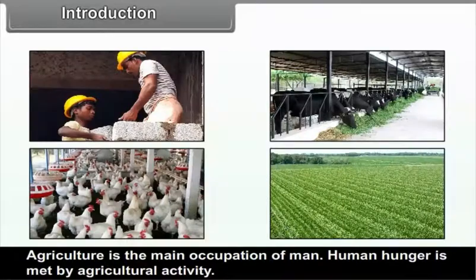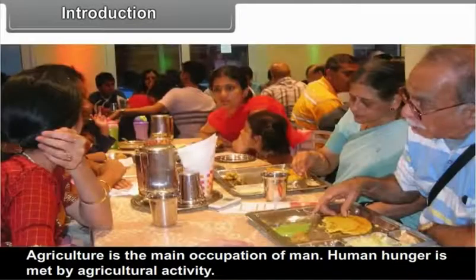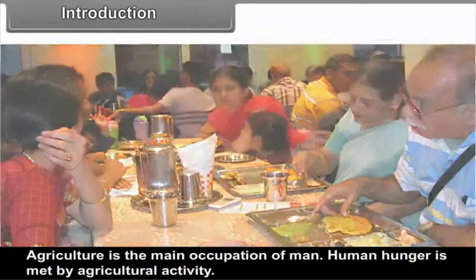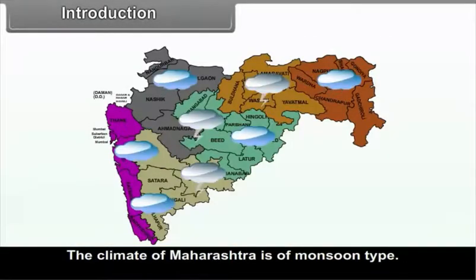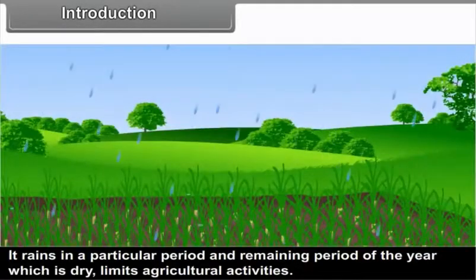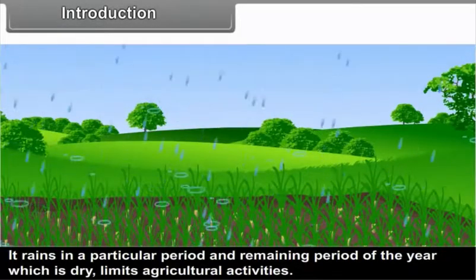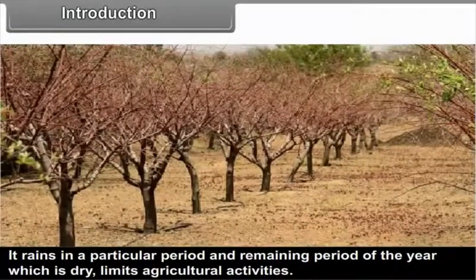Agriculture is the main occupation of man. Human hunger is met by agricultural activity. The climate of Maharashtra is of monsoon type. It rains in a particular period and the remaining period of the year, which is dry, limits agricultural activities.